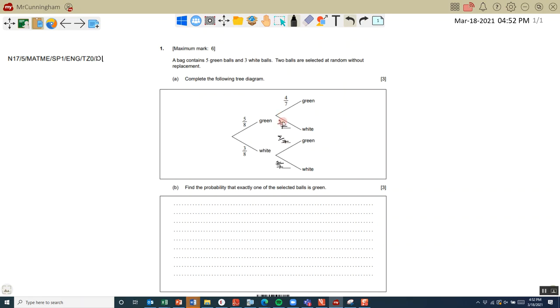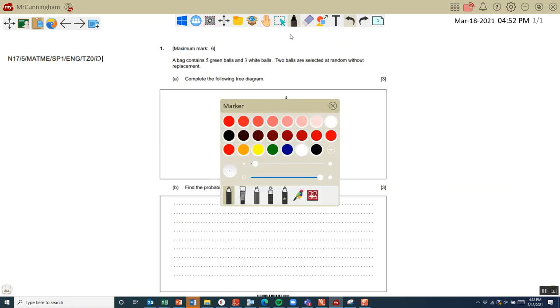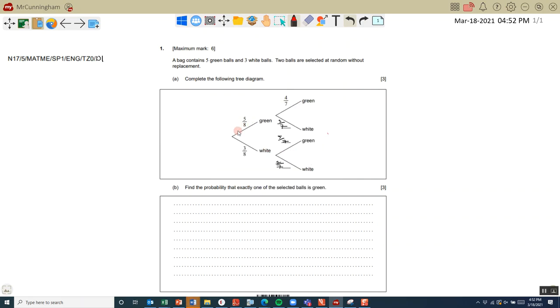The best way to check is that 4 plus 3 is 7, and 5 plus 2 is 7. Part b: Find the probability that exactly one of the selected balls is green. We could have either...